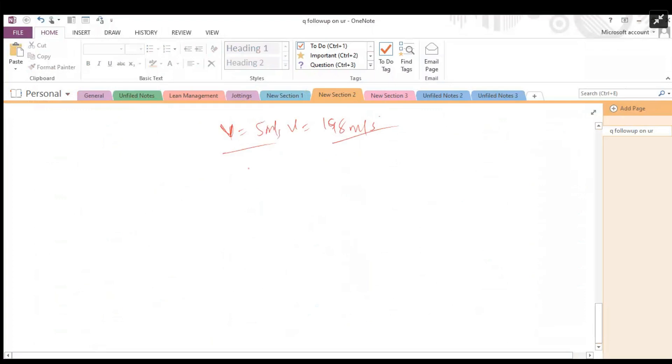Again, recall that v² = u² - 2gh. So 5² = 198² - 2(9.81)h. So we have 25 - 198².